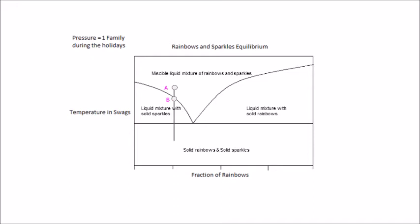Going from point A to B represents a gradual decrease in temperature. What do those curved lines represent? The curved lines represent the point of melting or freezing, depending on direction traveled, for a mixture of sparkles and rainbows over a range of compositions.